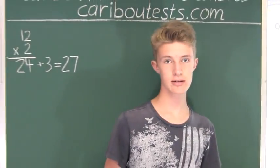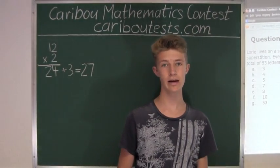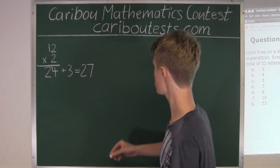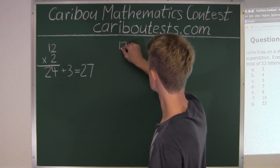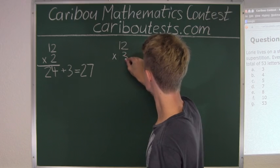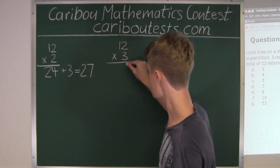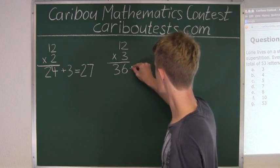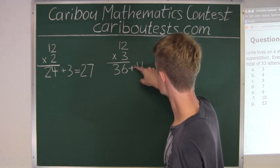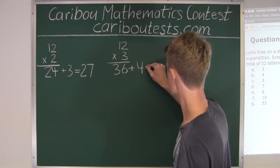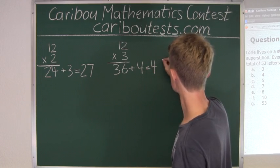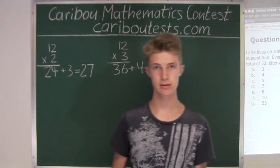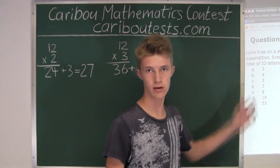If Lori received 4 letters, again, everyone else could only receive one less. So that would be 3 for all of the other 12 houses. Therefore, we would have 12 times 3. We have 3 times 2 is 6, 3 times 1 is 3, and then plus Lori's 4 letters. Now, this would equal 40. But again, that would only be 40 letters delivered to the whole street instead of the 53 that we want. So we know that she must have received more letters. We will look at the next biggest number,